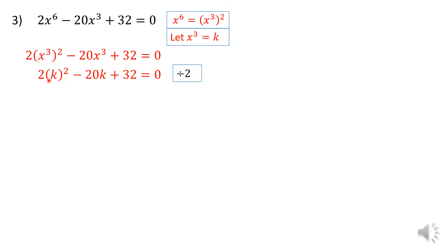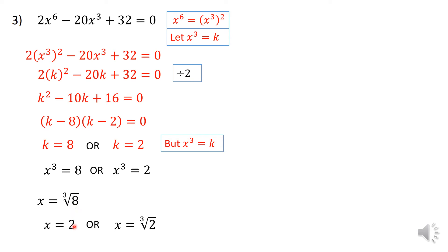And I'm just going to simplify that equation as 2 is a common factor. Dividing right through by 2, you get k^2 - 10k + 16 = 0, which factorizes to (k - 8)(k - 2) = 0. So two values of k are 8 and 2 respectively. But again, we're not looking for the values of k, but rather for the values of x^3. So x^3 = 8 or x^3 = 2. So to get rid, the inverse of something cubed is the cube root of that. Now, the cube root of 8 is 2, but the cube root of 2, I'm just going to leave it because it's an irrational number.